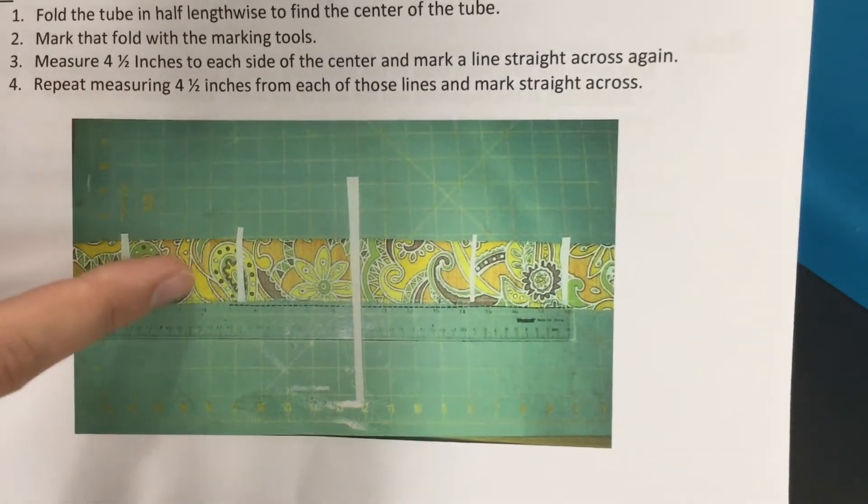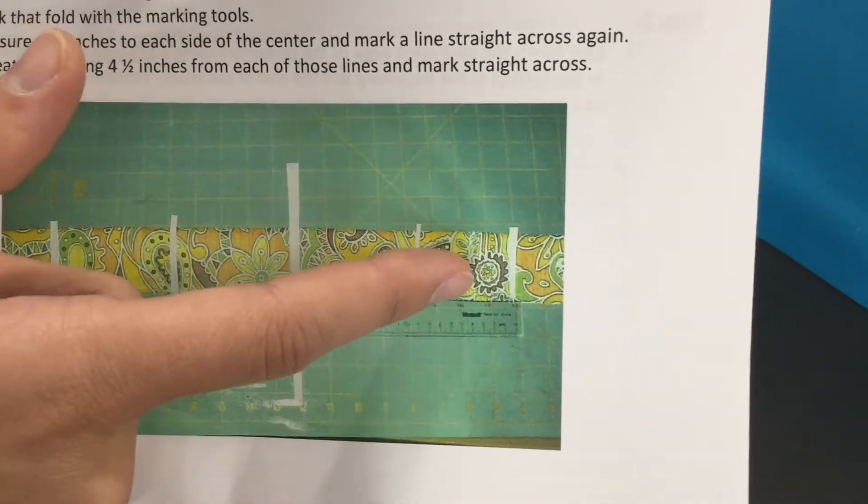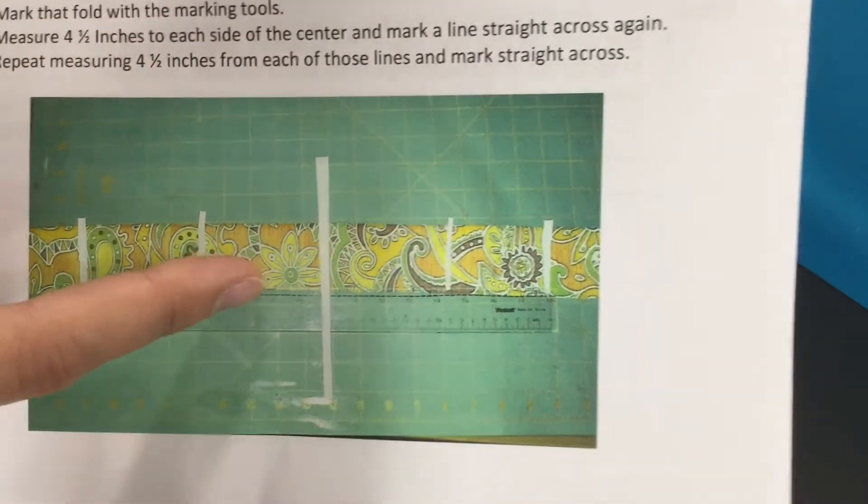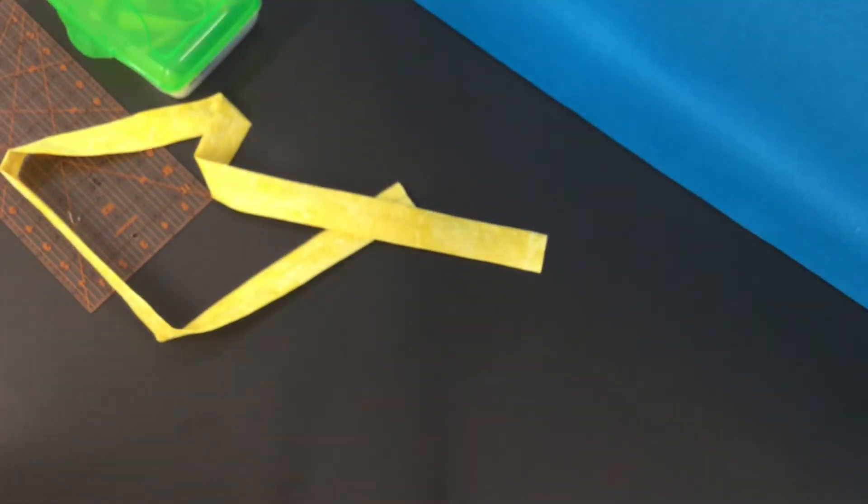So we have one, two, three, four pockets with one, two, three, four, five lines drawn on our fabric. Okay, here's how we do that.